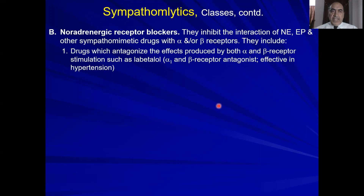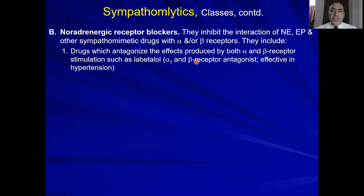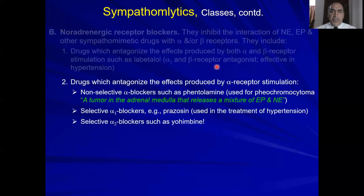The second major class is the noradrenergic receptor blockers, or simply adrenergic receptor blockers. When we talk about adrenergic receptors, there are two classes: alpha and beta. There are drugs that block both alpha and beta — they are called mixed antagonists, such as labetalol, which inhibits alpha-1 and beta-1 receptors and is effective in hypertension. Almost all of these classes are effective in hypertension.